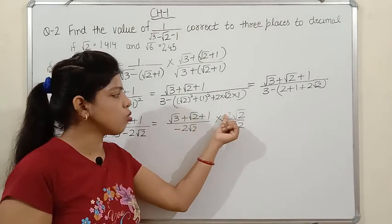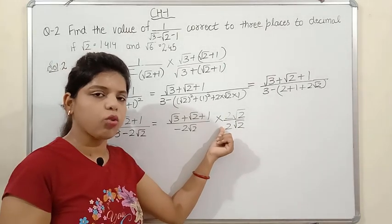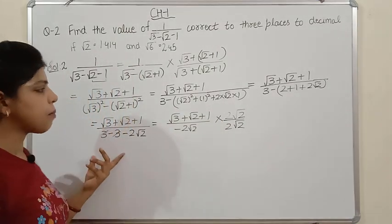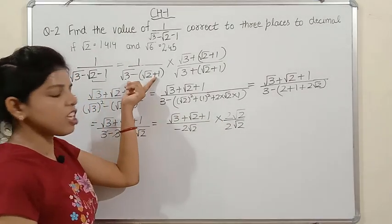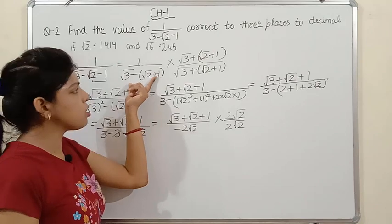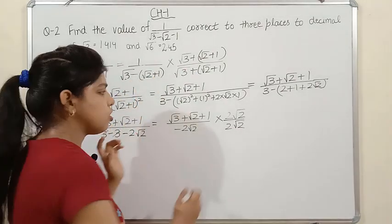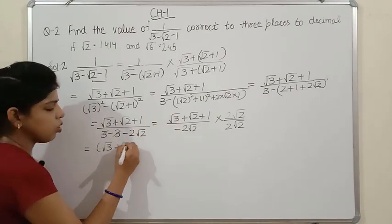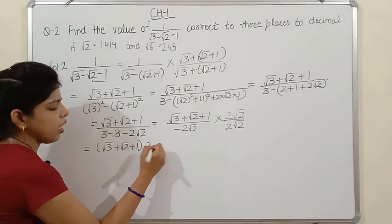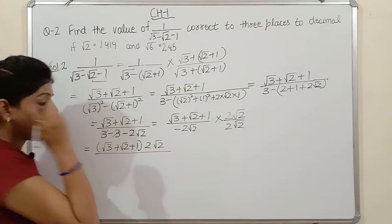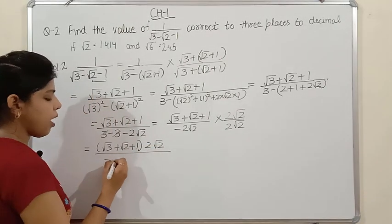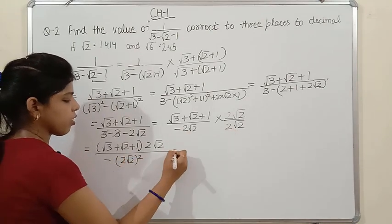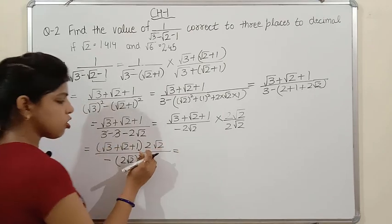Now we substitute the given values: √6 = 2.45 and √2 = 1.414. So the expression becomes -(2.45 + 2 + 1.414)/4. Actually from earlier, our numerator after simplification was (√6 + 2 + √2), which equals 2.45 + 2 + 1.414. We add these three values.